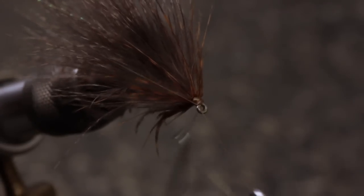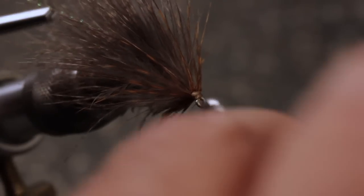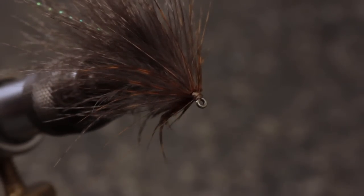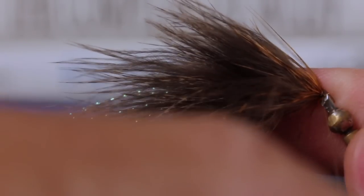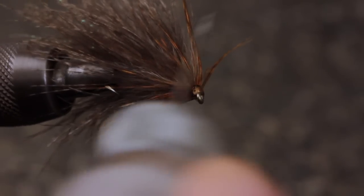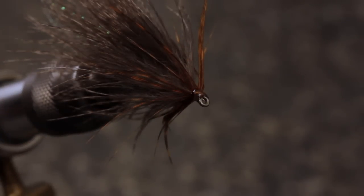Then secure the thread with a 5 or 6 turn whip finish. When you're done, seat the knot well and snip or cut your tying thread free. A drop or two of head cement adds to the look of the fly and helps to increase durability.